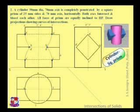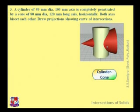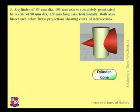This completes the cylinder and square prism problem. Now another problem: the intersection of a cylinder and a cone. This is one view of a cylinder and cone — a vertical cylinder with a cone penetrating inside it. Given data: a cylinder of 80 mm diameter and 100 mm axis is completely penetrated by a cone of 80 mm diameter and 120 mm long axis, horizontally. Both axes bisect each other.